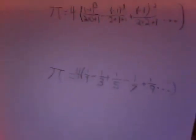1 over 1 minus 1 over 3 plus 1 over 5 minus 1 over 7 plus 1 over 9 and so on and so on. That is the equation right there for pi.